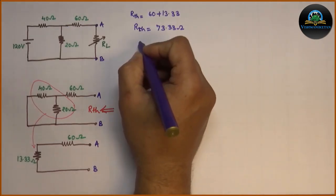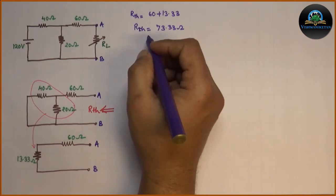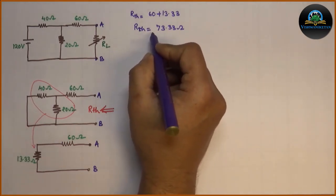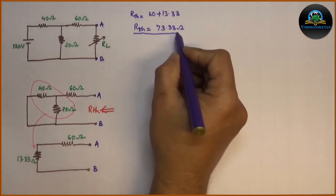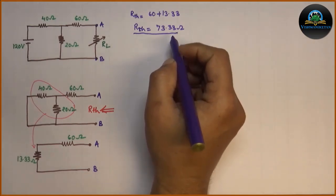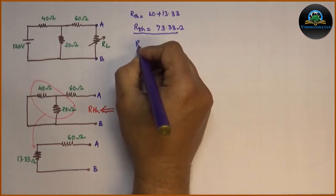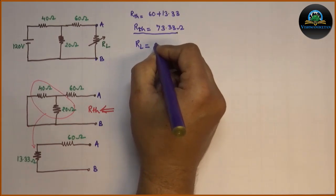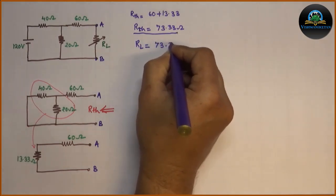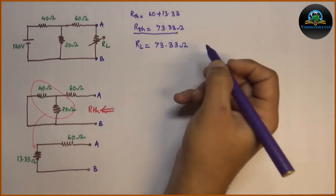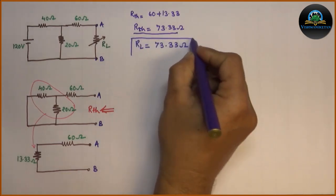According to maximum power transfer theorem, maximum power will be absorbed when the load resistance becomes equal to equivalent resistance. RTH is the equivalent resistance of the given circuit. Hence, we get RL as 73.33, which is equal to RTH.